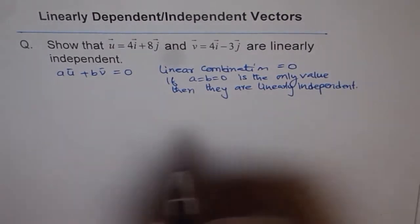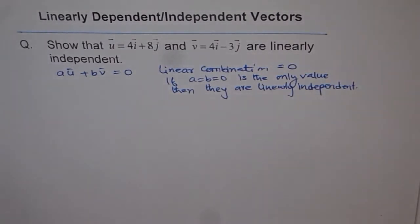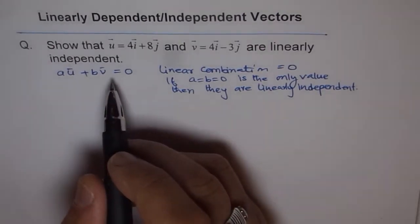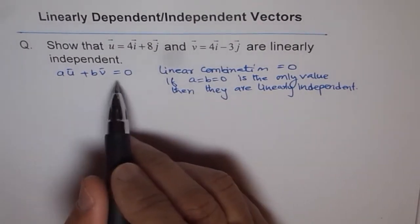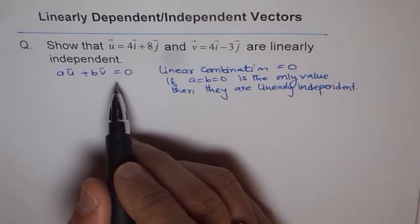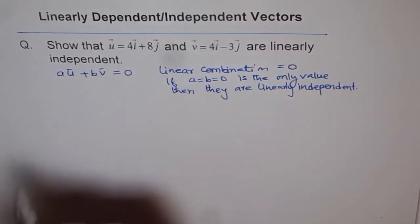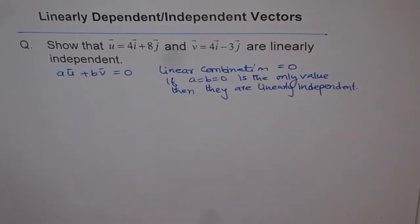So that is the criteria. We will start from the linear combination of these two given vectors, which is a*u plus b*v equals 0, and then see what values of a and b can make this equation true. So that is the strategy for us.